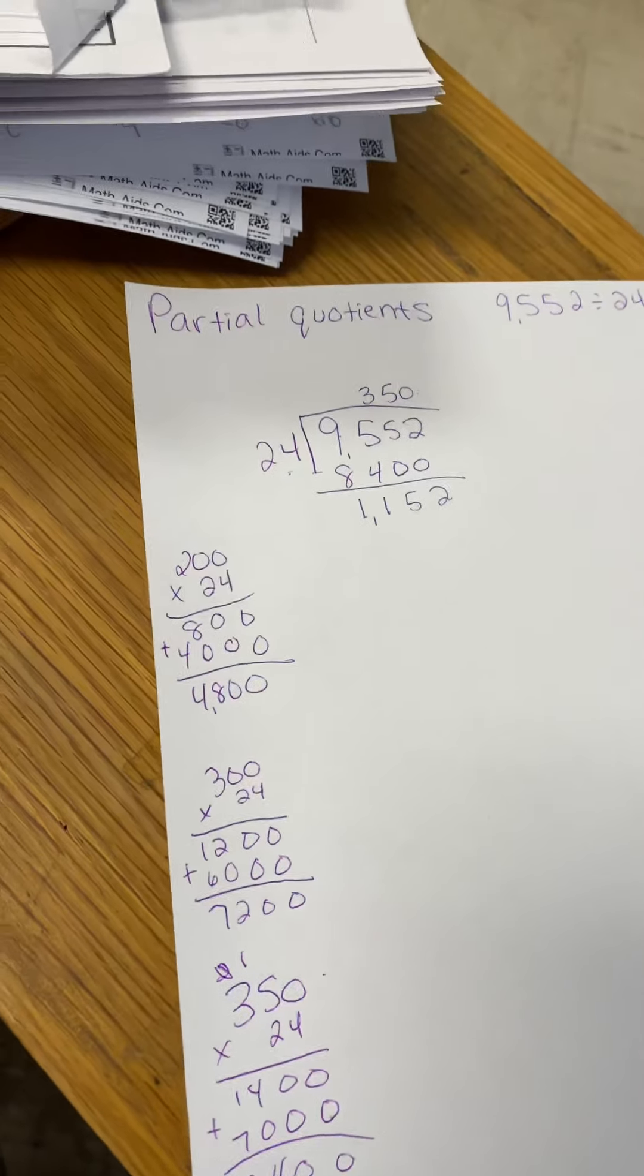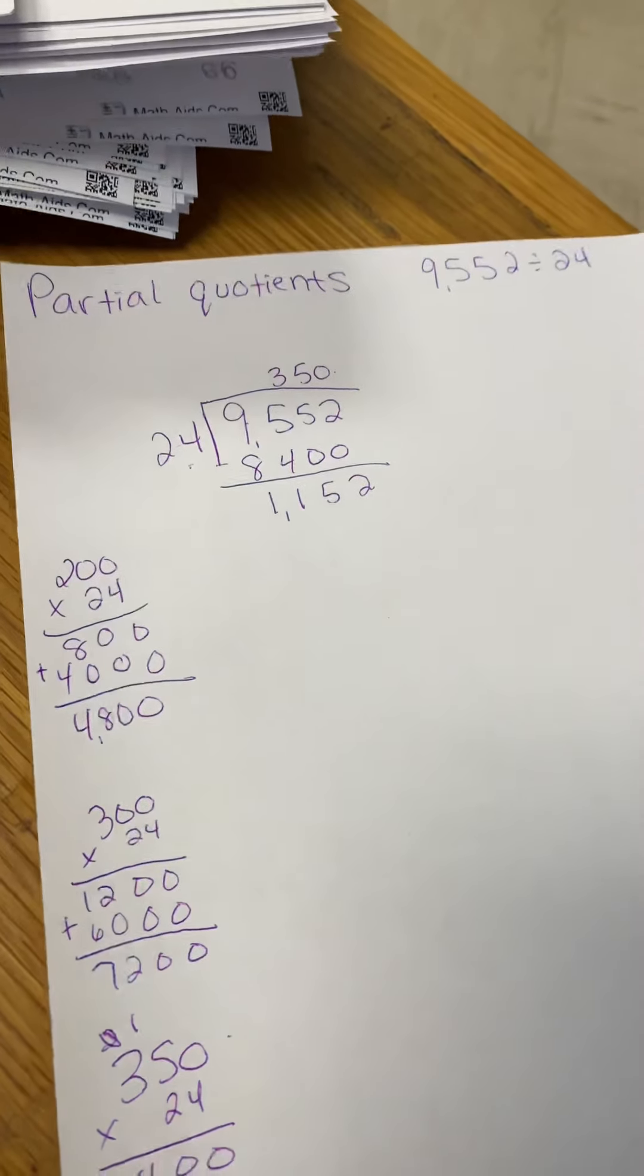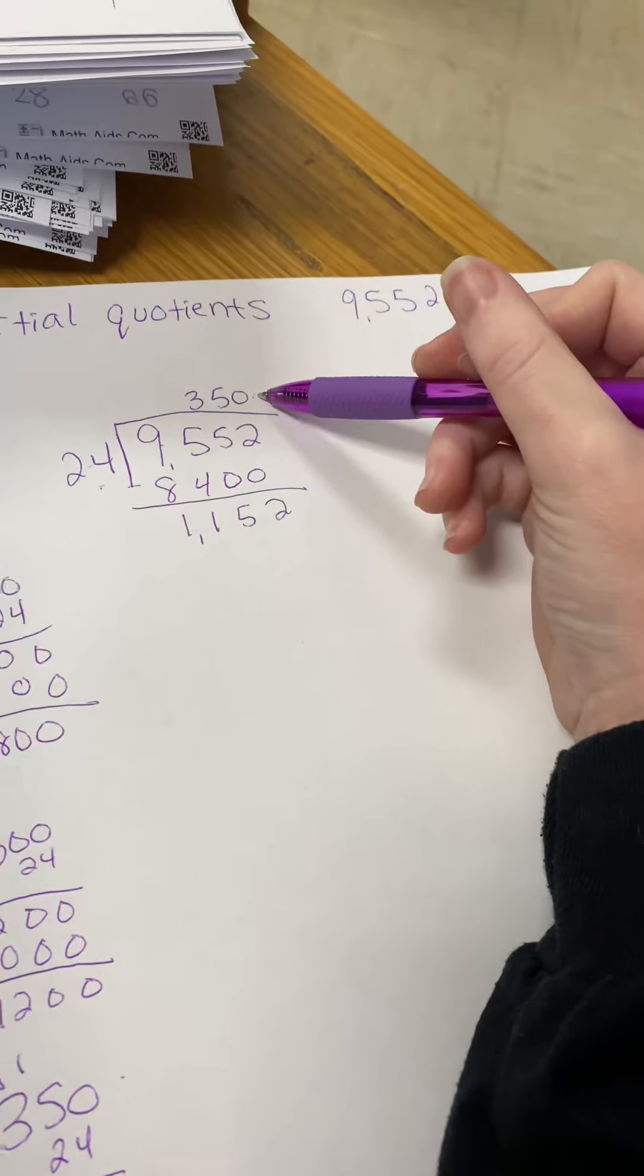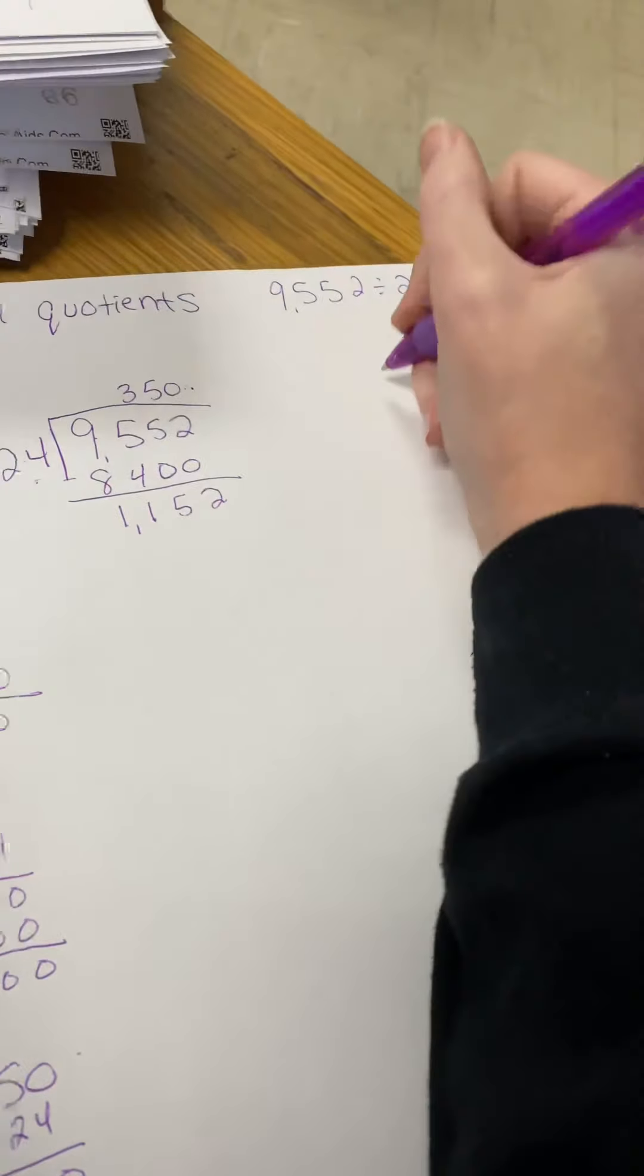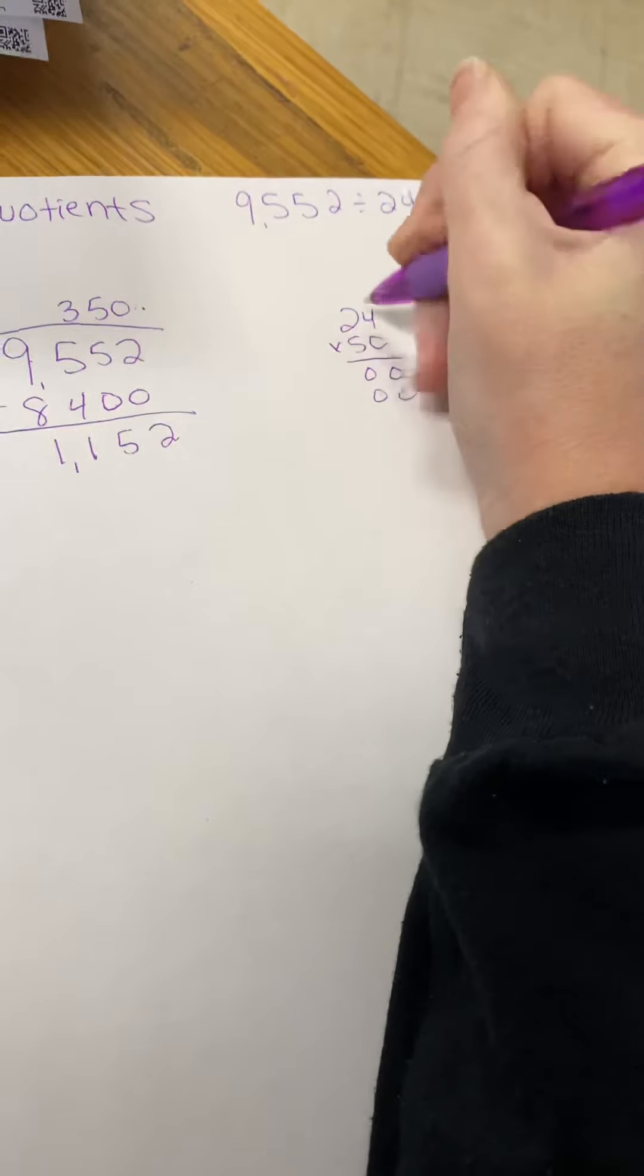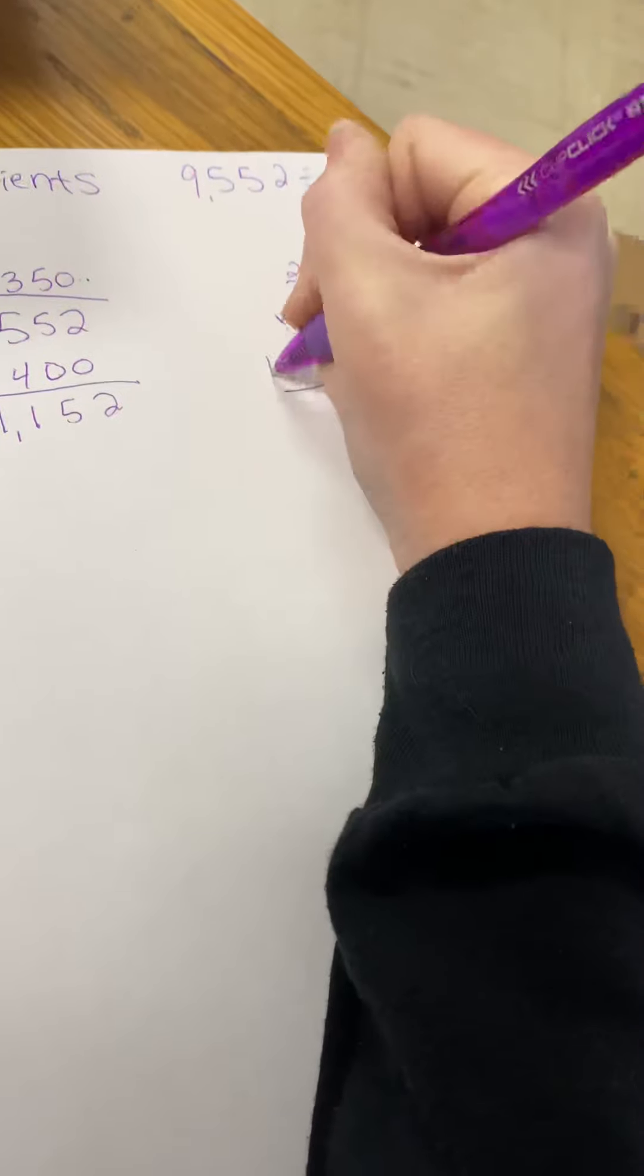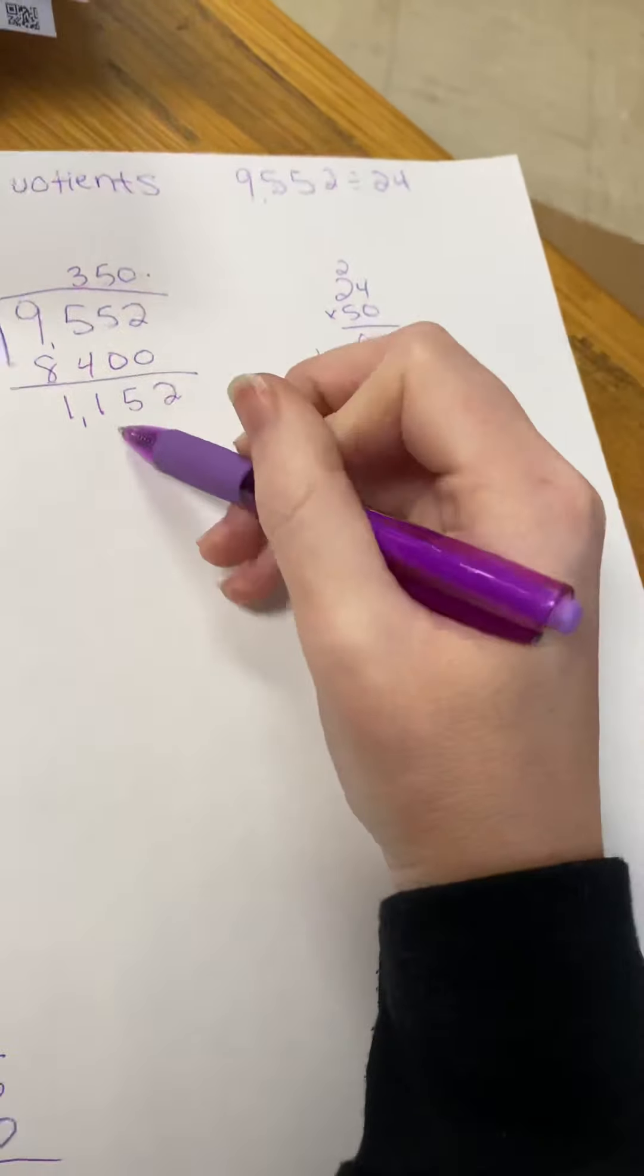Again, we have another part where we do trial and error. You take 24, multiply it by something to get close to 350 without going over. Let's try 24 times 50 and see what we get. 0, 0, 0, 20, 2 times 5 is 10, plus 2 is 12. Add your partial products, you get 1,200. I went over.